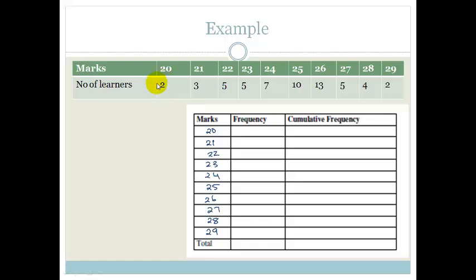Now if we look at this we can see the frequency that we have of each of these is 2 people got 20, 3 people got 21, 5 people got 22, 5 people got 23, 7 people got 24, 10 people got 25, 13 people got 26, and then it starts dropping down again, 5, 4, and 2.